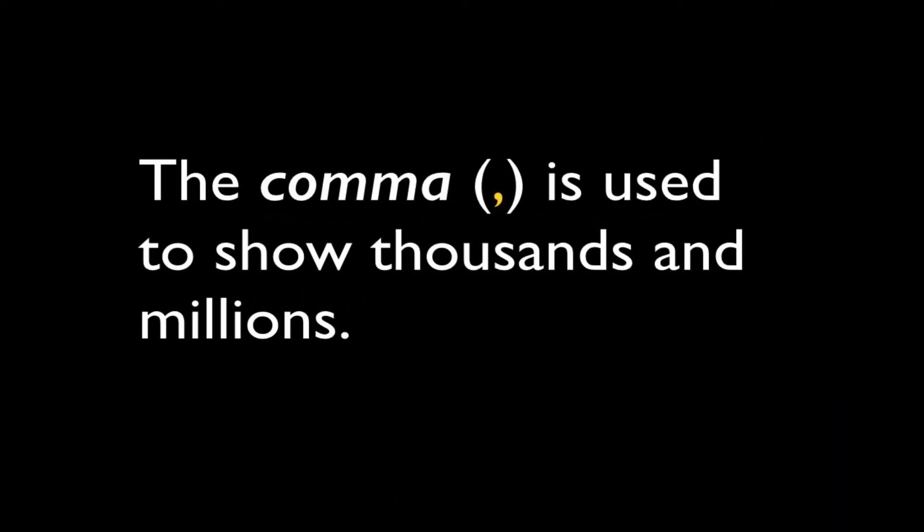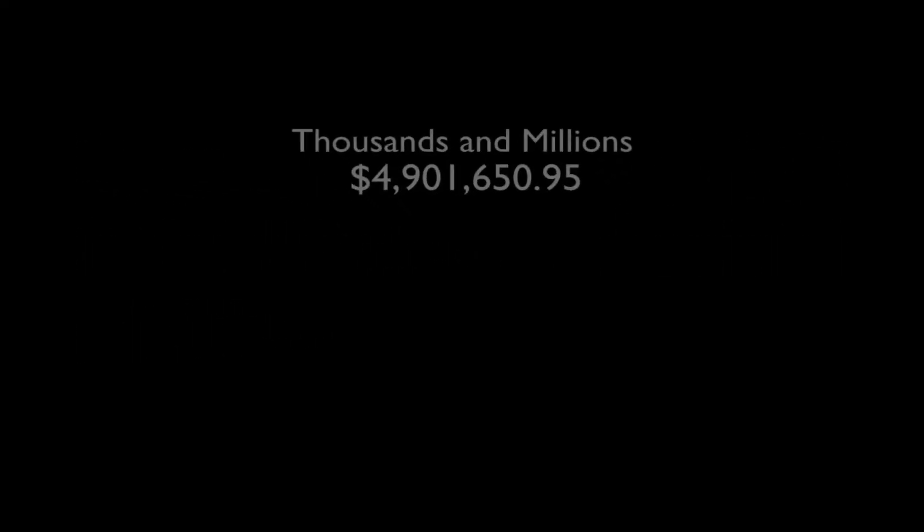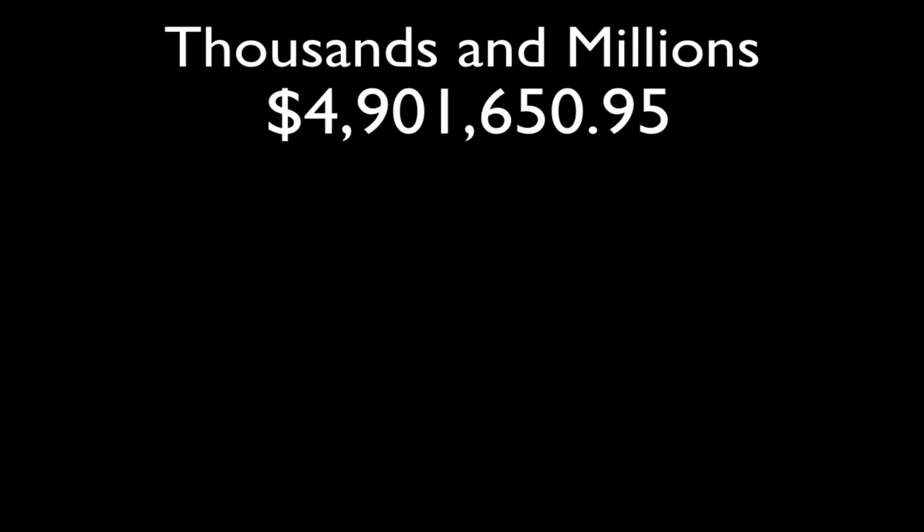Now because we have a decimal point, we need to show thousands and millions with a comma. Here we've got a large number and you can see how the commas are used to show thousands and millions. The point in this case is four cents. The decimals here with money are cents.